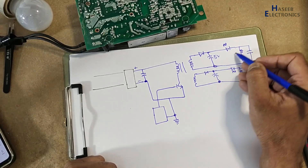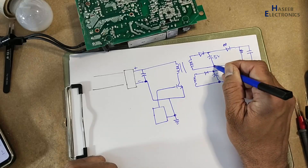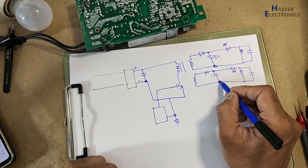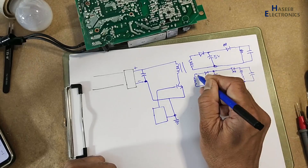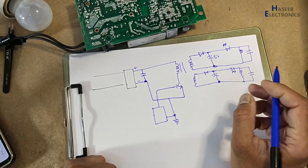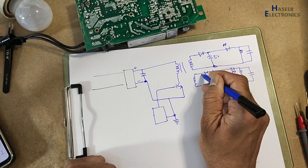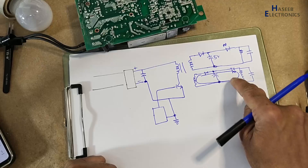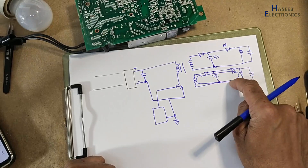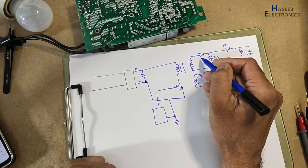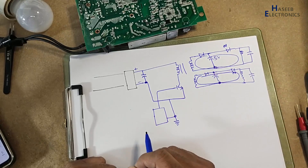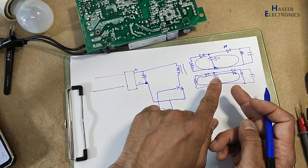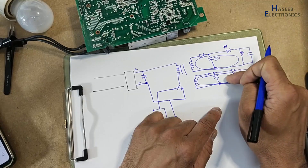If we want to measure this circuit, we take the reference point from this capacitor. If we want to measure the other circuit, we take the reference from its own capacitor. Why? Because we need to trace the source — where is the voltage source, where is the current source. This circuit has no concern with that one; its current flows within its own circuit. So we must identify the common ground for each circuit separately.